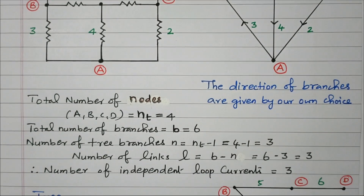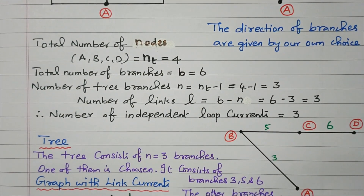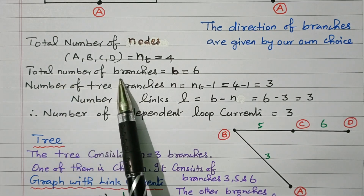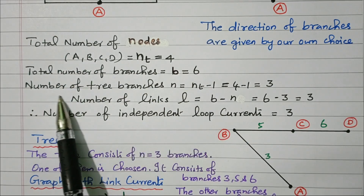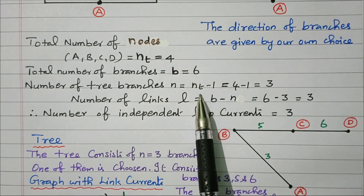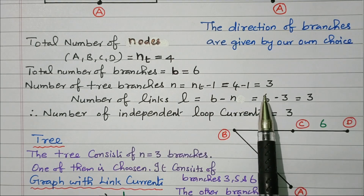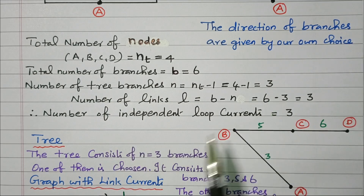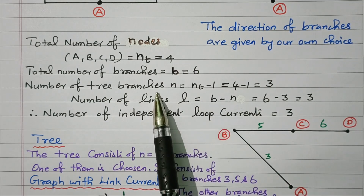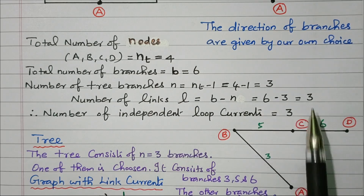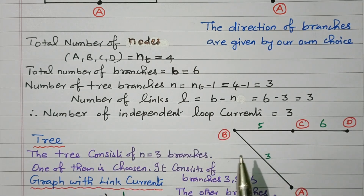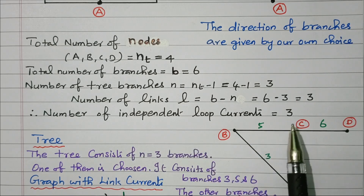Now we will go to the next step: the tree. We need to identify the tree for the given graph. The total number of nodes is four: A, B, C, D. Total number of branches is six. From that we can find the number of tree branches. The number of tree branches T equals N minus 1, where N is the number of nodes: four minus one equals three. So in a tree, the number of branches will be three. The number of links L equals B minus T: six minus three equals three. So the number of links is three, meaning the number of independent loop currents is three. We can see three loops by looking at the network.